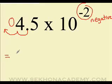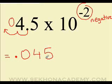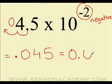Start with a point, and then copy 0, 4, 5. Do not write 10 to the negative 2 anymore. Point 0, 4, 5 is the same thing as 0.045.